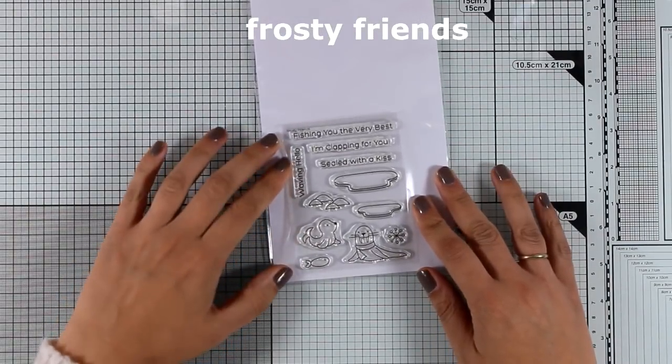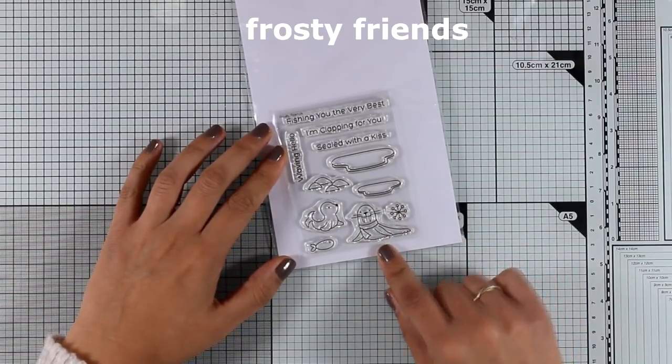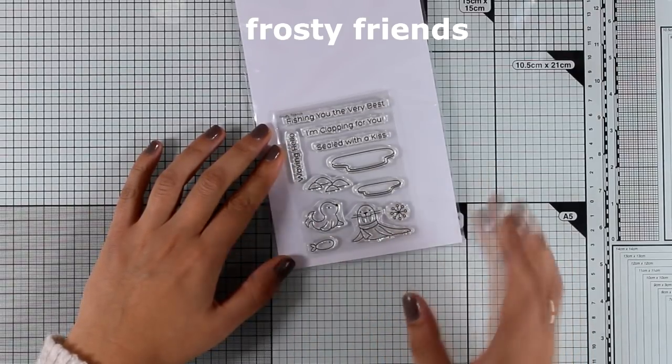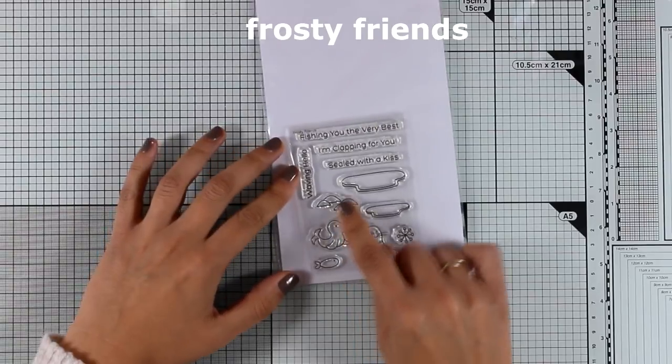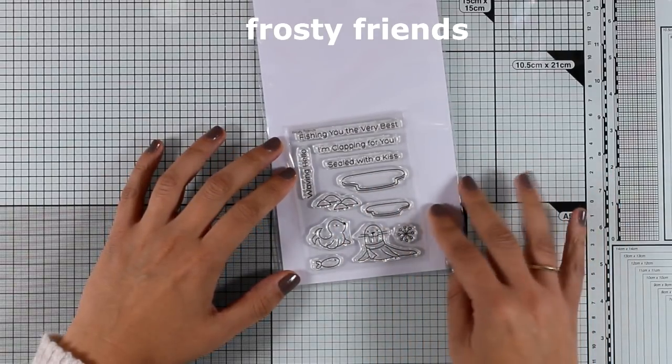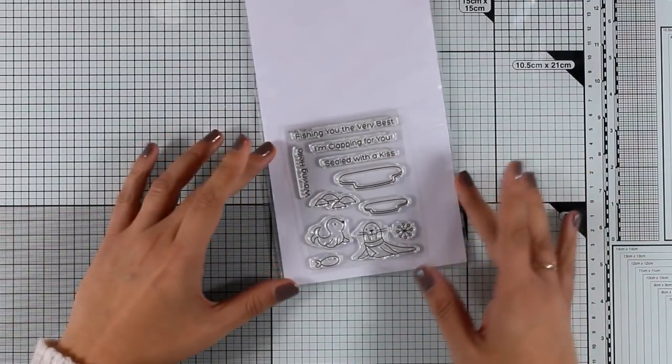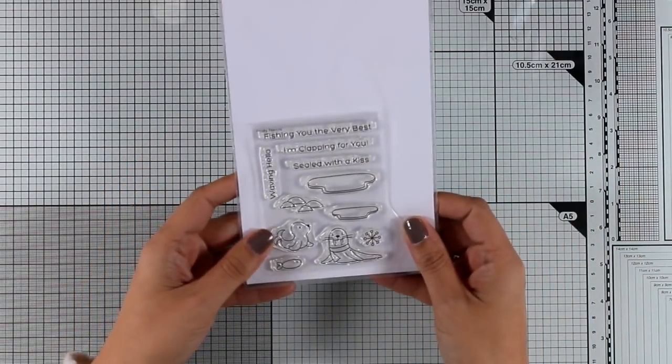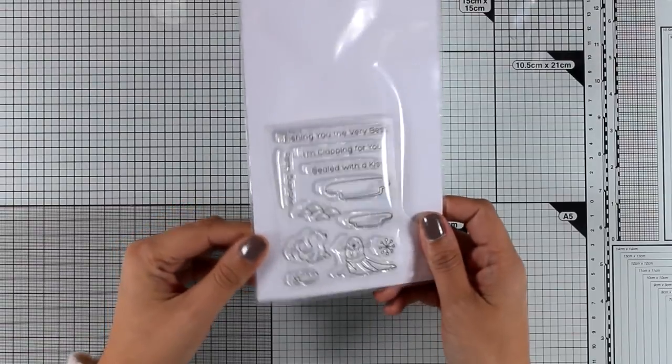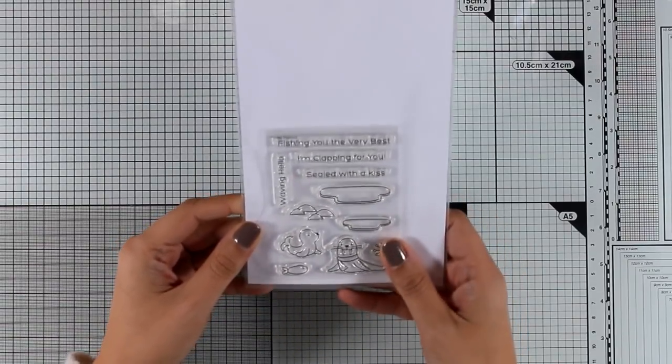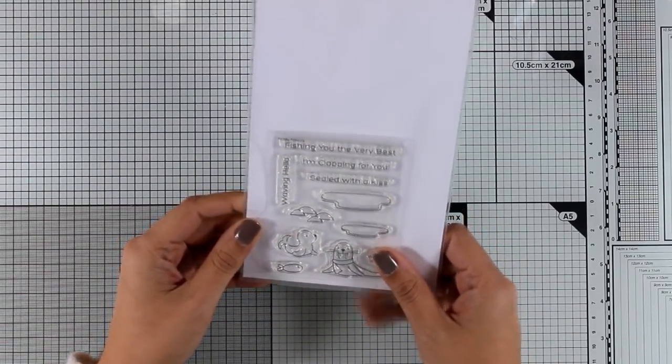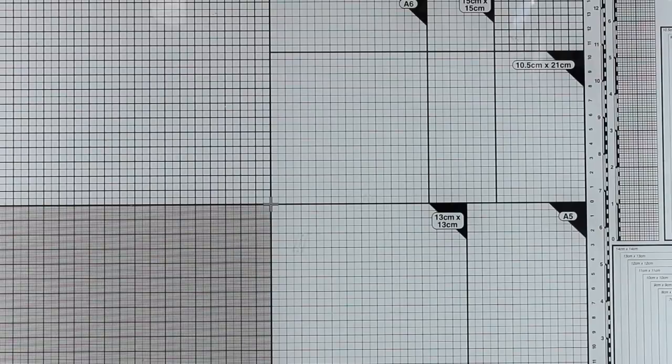And here is an adorable stamp set called Frosty Friends. This is a stamp set that you cannot buy, it comes free when you order $60 of products from the website of My Favorite Things. So this is what they call free with $60 and there is one more free with $60 with this release plus a coupon so make sure to visit my blog to read all about these details.